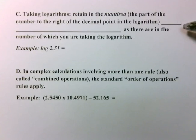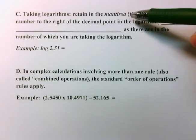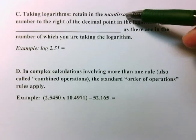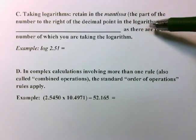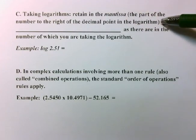First of all, when taking logarithms, you may recall this word mantissa that you learned back when you learned about logarithms. The mantissa is the part of the number to the right of the decimal point in a logarithm. So it's what comes after the decimal, all those digits that come after the decimal.